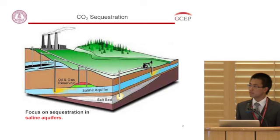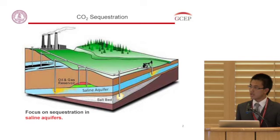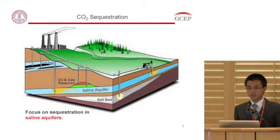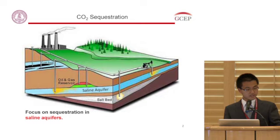I don't think I need to motivate why CO2 sequestration is important. It is one of the most effective ways to reduce anthropogenic CO2 emissions into the atmosphere. After CO2 is captured from sources like power plants, it is transported to and injected into underground geological formations. In this research, we focus on sequestration in saline aquifers because they are widely distributed around the world and have a big sequestration capacity.